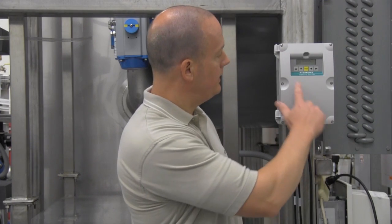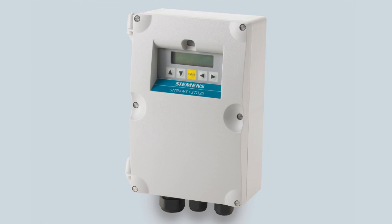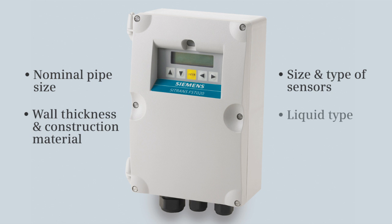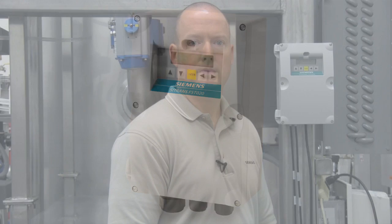For this exercise, we will program the meter using the keypad. So let's start the demonstration. To configure the FST020, we need the following application details: the nominal pipe size, wall thickness and construction material at the sensor location, the size and type of sensors we will be using, and the type of liquid we will be measuring. We only need to set four parameters to start measuring flow.